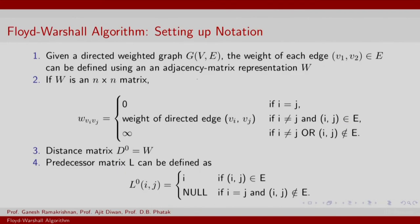Let us set up the notation before we give you the complete algorithm. Given this weighted graph, we want to represent the weight of each edge in an adjacency matrix representation. W is the adjacency matrix representation. W between i and j is the weight of the edge v_i to v_j. It is set to 0 if i equals j. If i,j is an edge, then w(v_i, v_j) is the actual edge weight. W is the shortest path matrix that we initialize to W.